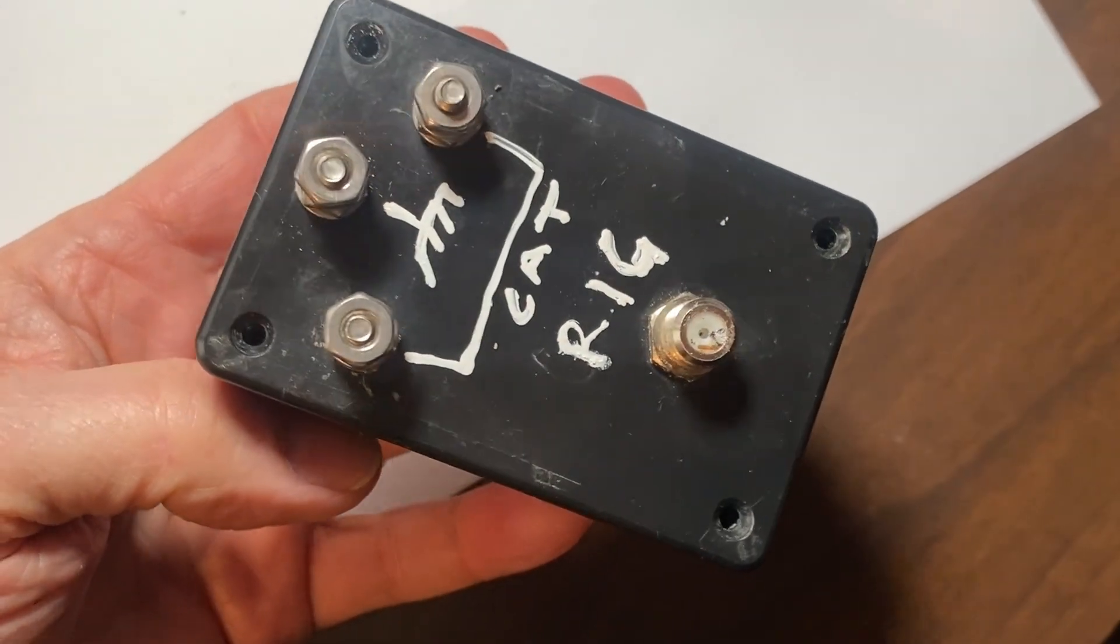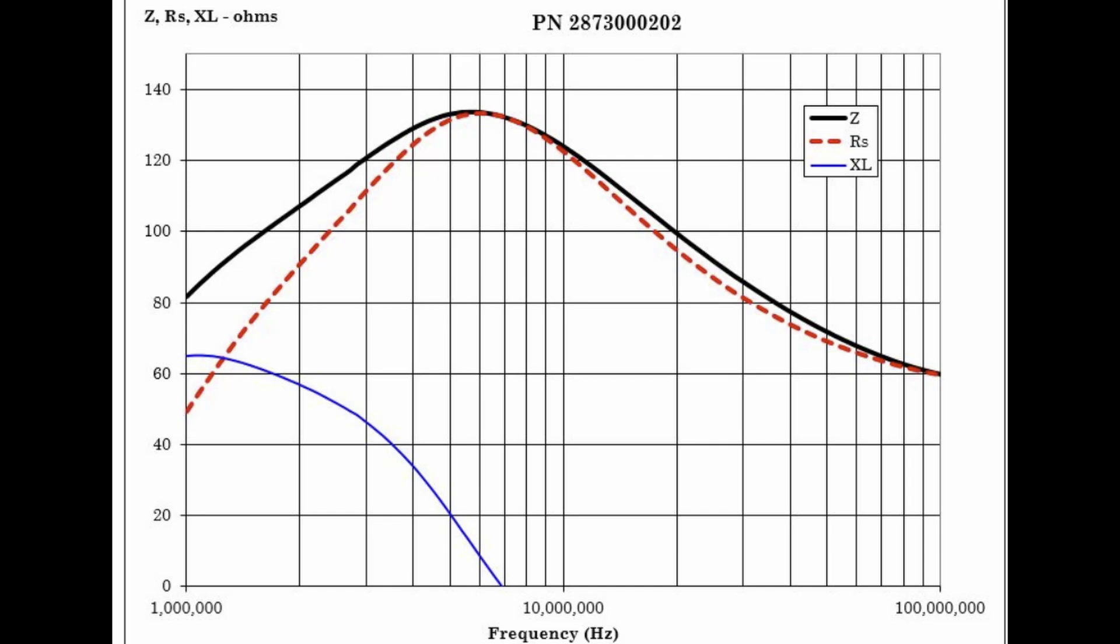Using this method, you can match anything you want. It's not complicated. Don't fuss about the core material. The binocular ferrite 73 material units are good from medium wave right through most of HF.